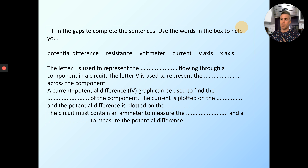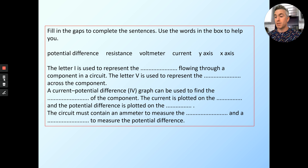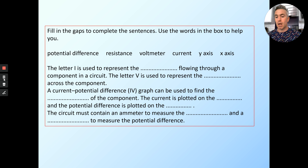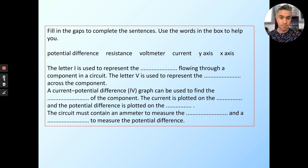Now fill in some missing words. The letter I is used to represent something flowing through a component in a circuit. The letter V is used to represent something else across the component. The current-potential difference graph can be used to find the something of a component. The current is plotted on the something and the potential difference is plotted on the something else. A circuit must contain an ammeter to measure the current and a something else to measure the potential difference.